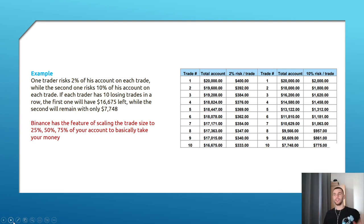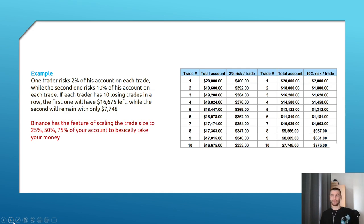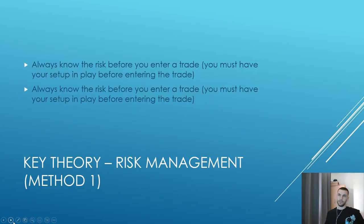One reason why Binance and other exchanges offer leverage scales of 25x, 50x, 75x is to take your money. None of the exchanges, none of the brokers, want you to win. Be aware of this. If you're risking 2% per trade, your risk management is better than the person risking 10%. In my opinion, even 2% is still a bit too much. But this is just the basic theory — I'm not going into more detail about risk management in this presentation.